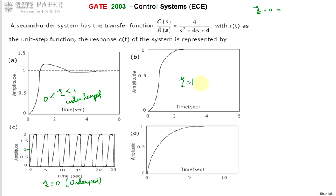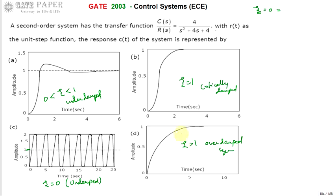When zeta is equal to one, it is called a critically damped second-order system. The response is fast but without any peak overshoot — it reaches the final value directly without any overshoot.